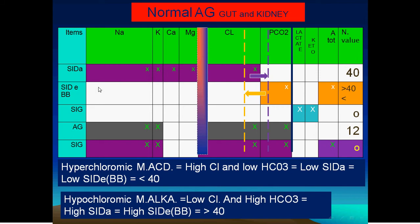The strong ion difference changes only with normal anion gap conditions. It does not change with high or low anion gap. This is because it equals sodium minus chloride — changes in chloride or sodium alter the strong ion difference, but a change in bicarbonate itself has nothing to do with this. In high anion gap cases this is a problem, but in normal anion gap states, changes in bicarbonate through the gastrointestinal tract or kidney are associated with corresponding changes in chloride.